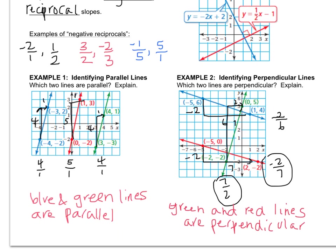Oh, you know what I forgot to do? It said that you also have to explain how you know. So I put these fractions around. But let me add to my definition. So I'm going to go back to example one where it says blue and green lines are parallel. And I'll add because they have the same slope.